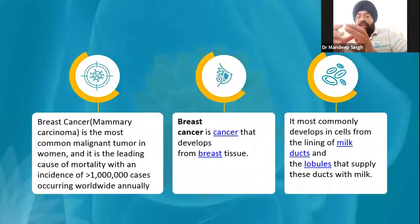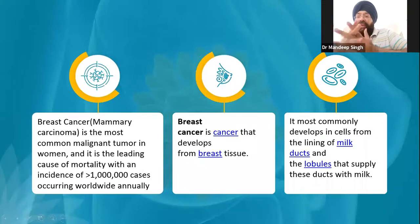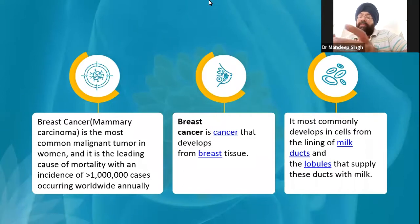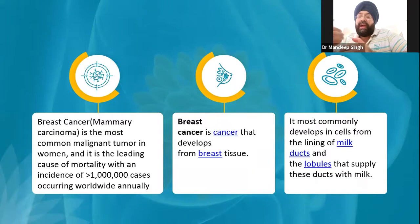Breast cancer, as we all know, is the most common cancer affecting women. Nowadays there are about 1 million new cases worldwide every year. Breast cancer basically arises from the breast tissue — specifically the milk-forming tissue, that is the lining of the milk ducts and the lobules that supply milk into these ducts. This is the tissue from where breast cancer actually develops.